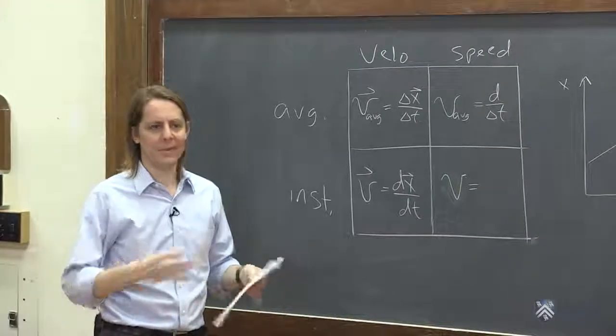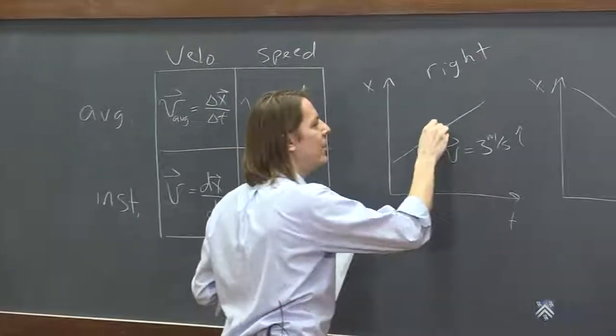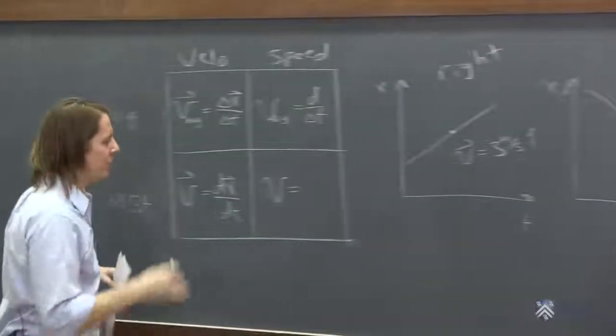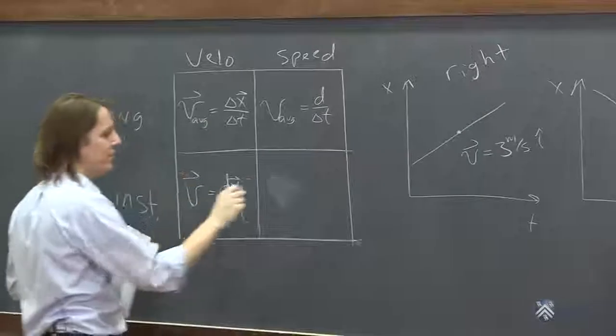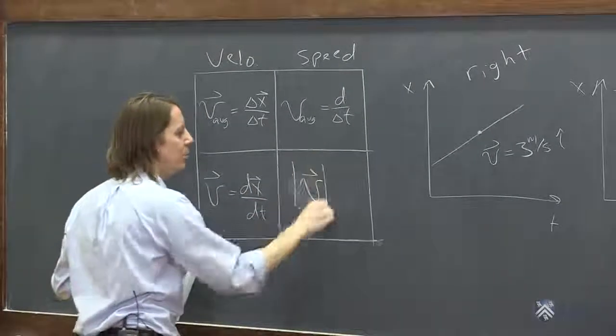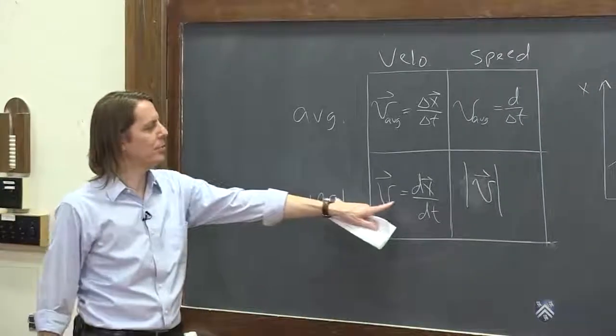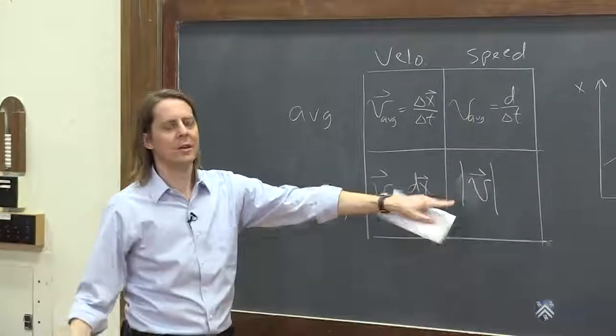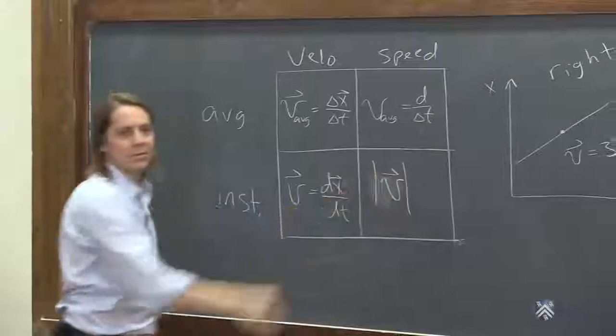But what the speed would say is it's just 3, because speed doesn't care about the direction. All speed cares about is how fast it's going. So the instantaneous speed would also be the value right at a point, but it wouldn't care about the sign. So the way we write that in physics is we just take the vector and we take what we call the magnitude, to put these two bars on it. And that's the magnitude of the speed.